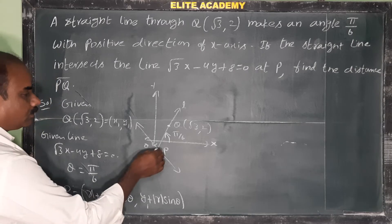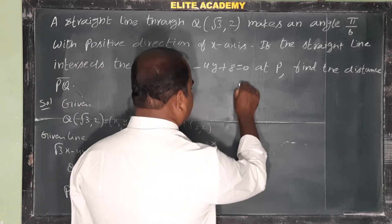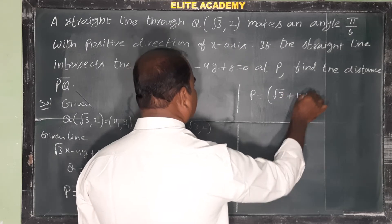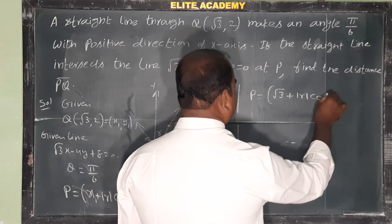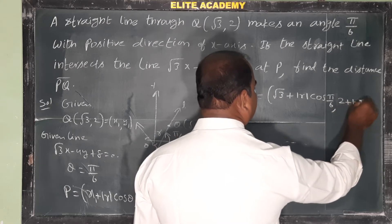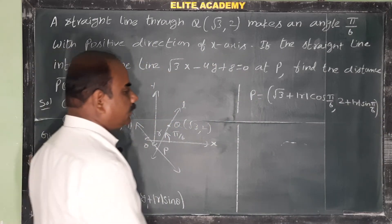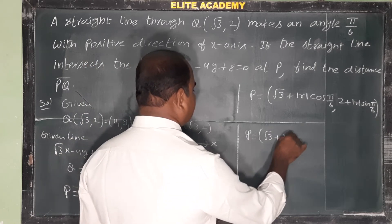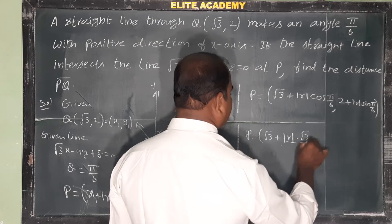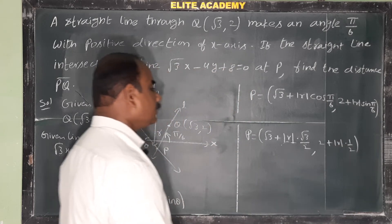Substituting the values: x₁ = √3, y₁ = 2, θ = π/6. So P = (√3 + |r|·cos(π/6), 2 + |r|·sin(π/6)). Now cos(π/6) = cos30° = √3/2, and sin(π/6) = sin30° = 1/2. So P = (√3 + |r|·(√3/2), 2 + |r|·(1/2)).